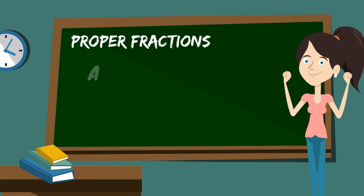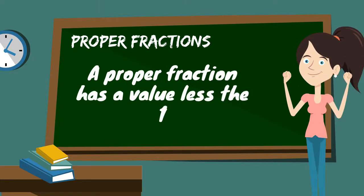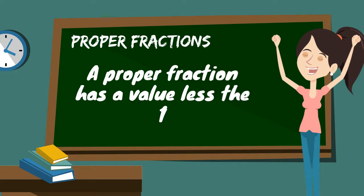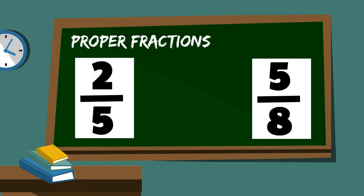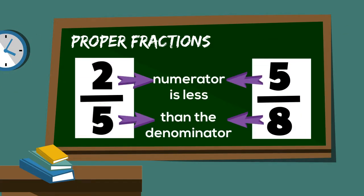A proper fraction has a value that is less than 1. Example, 2 by 5 and 5 by 8. Numerator is less than the denominator.